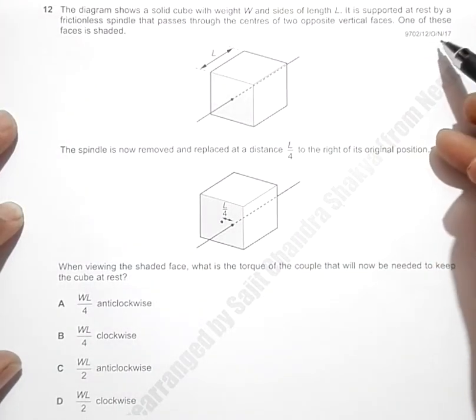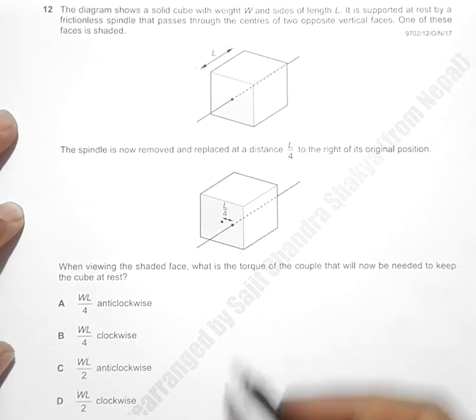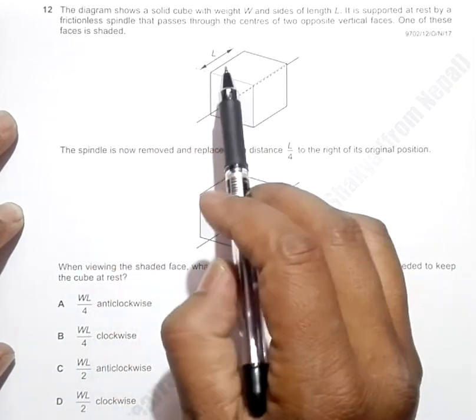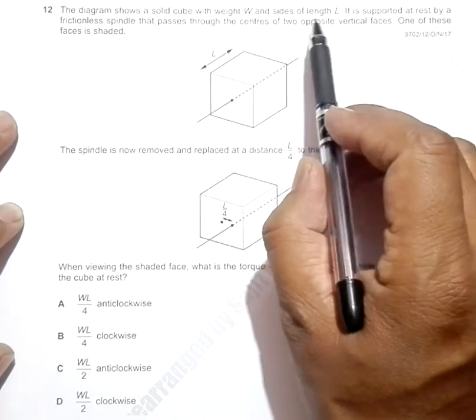This is the question from 2017 October/November Paper 12, Question 12. The diagram shows a solid cube with weight W and sides